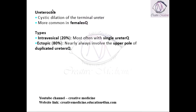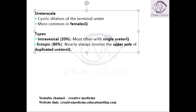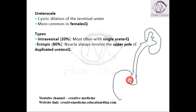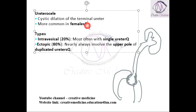What is ureterocele? Ureterocele is cystic dilatation of the terminal ureter. If this is the kidney and this is the ureter, in the terminal ureter while it is going into the urinary bladder, you will see the cystic dilatation. This cystic dilatation of the terminal ureter is called ureterocele.